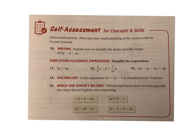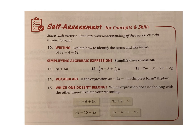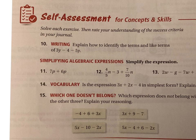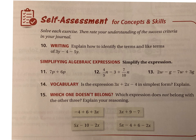Let's do a little self-assessment. We can do number 10. It says explain how to identify the terms and like terms. With this one over here, we have 3y minus 4 minus 5y.